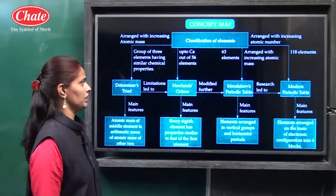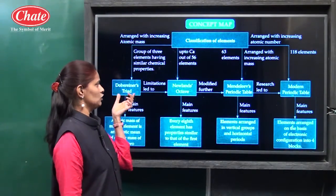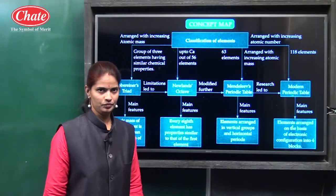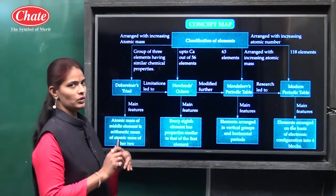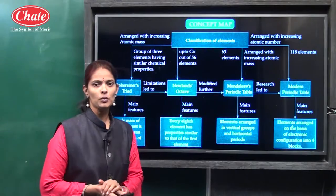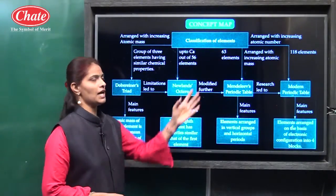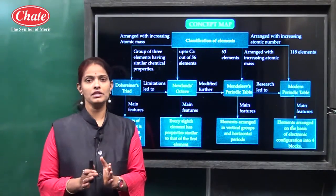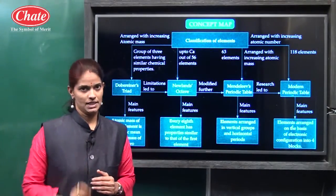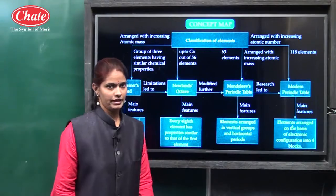Here, classification of elements — the elements are classified by three scientists: Dobereiner, Newlands, and Mendeleev. From this chapter we know there are similarities in the study of these three scientists, that is, these three scientists arrange the elements in increasing order of their atomic masses. This is the similarity in the study of these three scientists.